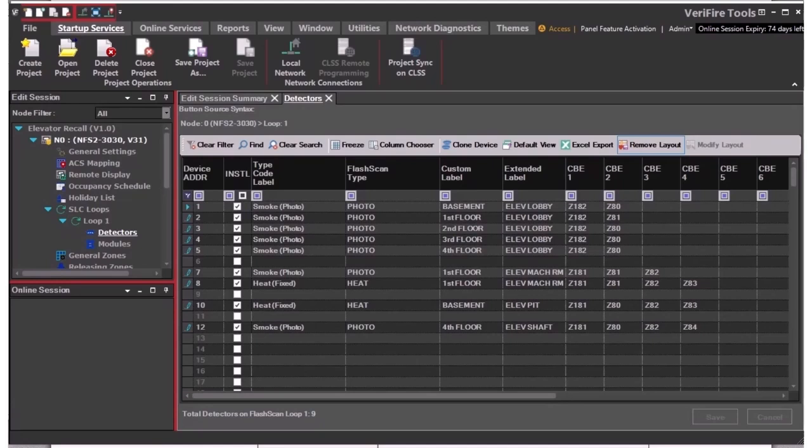As stated before, it is best to make these program changes using the appropriate software for the fire panel. That way you have a backup copy. But maybe something happened, your computer broke, and it needs to get done today. So this is Verifier Tools. And you can add a thermal sensor or change one of these smokes to a thermal sensor.